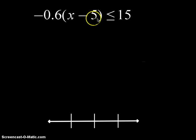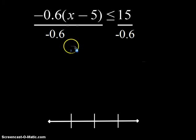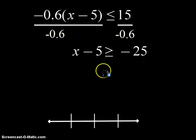Or, what you could do is look at what you would do if you knew x. If you knew x, you would take x, subtract 5, then multiply it by negative 0.6. So let's reverse those order of operations. I'm going to divide by negative 0.6 on both sides first. So what I'm going to be left with is just this x minus 5 part, which is going to be greater than or equal to negative 25.